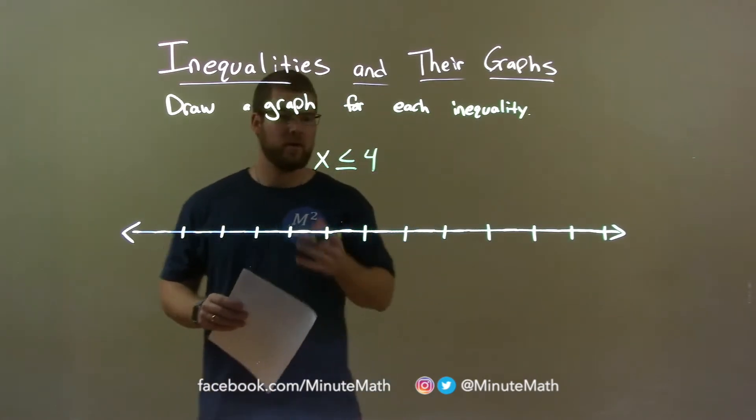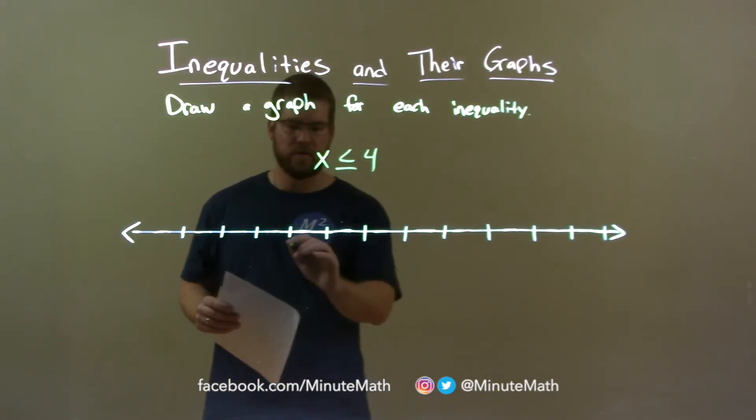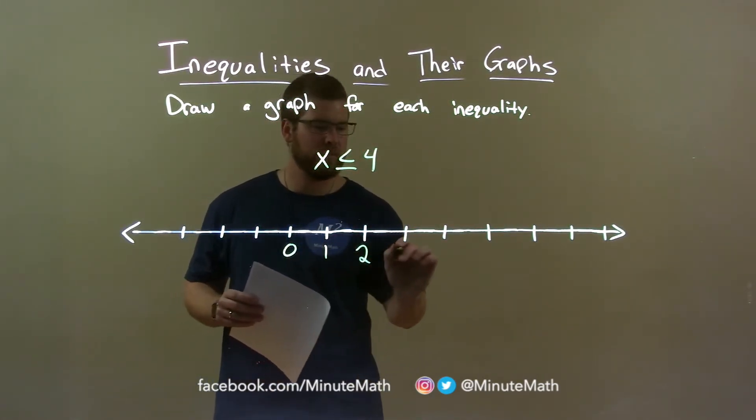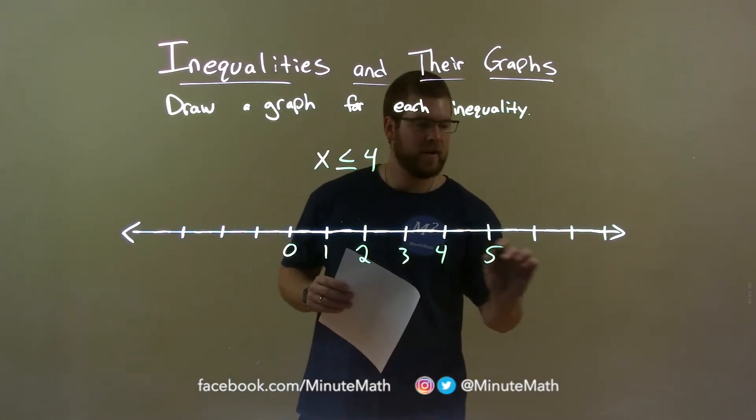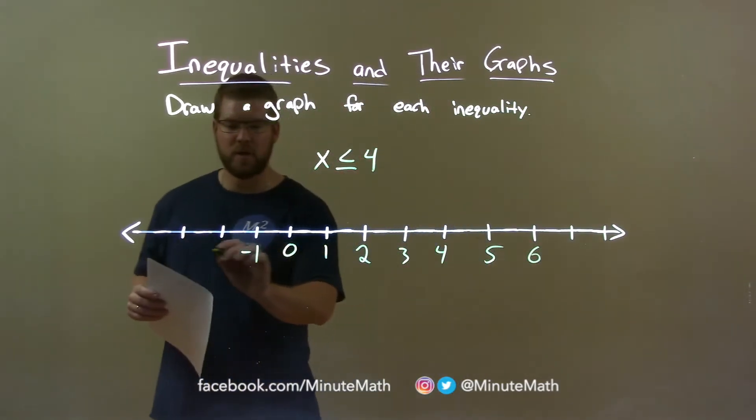So we first want to get our units. Now we'll make sure 4 is somewhere there. So if we do 0 here, 1, 2, 3, 4, we've got 5, 6, and negative 1, negative 2.